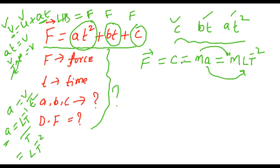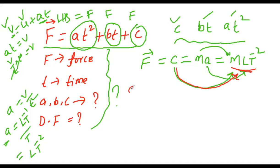Student: MLT⁻². Very good! So C = MLT⁻². This is clear. Now we have to find B and C also, right? Yes, sir. We have to equate: F = BT.